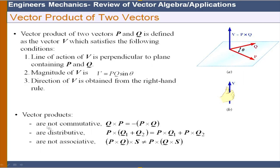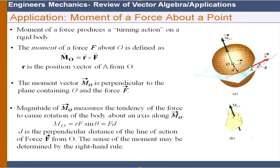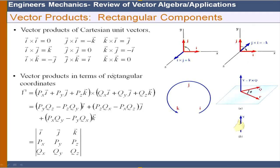Characteristics of vector products: they are not commutative but are distributive — P × (Q1 + Q2) = P × Q1 + P × Q2. They are also not associative: P × (Q × S) ≠ (P × Q) × S. In rectangular components, P × Q is computed by taking the determinant of the matrix whose first row is the unit vectors I, J, K, second row is components of P, and third row is components of Q.